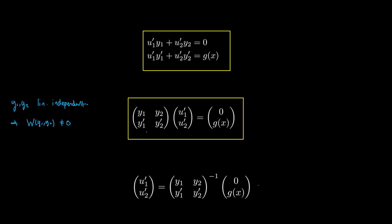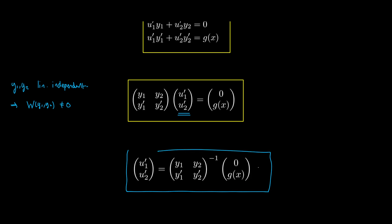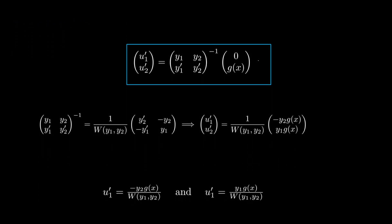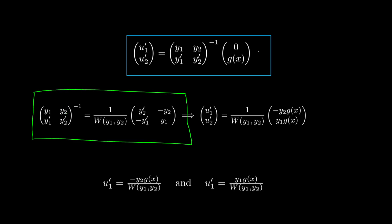Since the Wronskian is non-zero, the matrix has an inverse for any value of x, so we can solve for u1 prime and u2 prime by multiplying both sides by the inverse. For two-by-two matrices, we can express the inverse easily using Cramer's rule: take one over the determinant and swap around a few variables, giving us this formula.